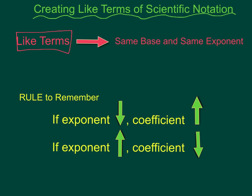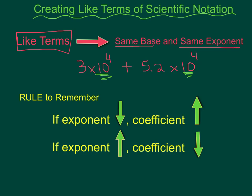Like terms is when you have the same base and the same exponent. So here let me give you an example. Let's say we have 3 times 10 to the 4th power, and we want to add another number that's in scientific notation. So let's say we have 5.2. The only way we can do it is if this number has the same base, 10, and the same exponent of 4. So if we don't have these like terms, we have to create them.